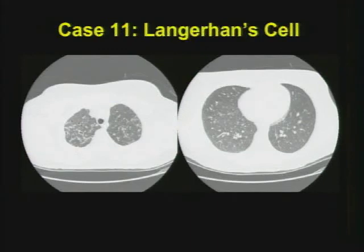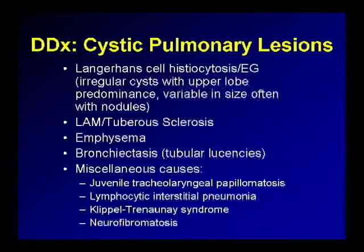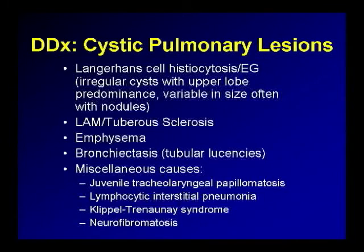Case number eleven: Langerhans cell histiocytosis — or as the old guys say, EG. Irregular cysts in the apices — notice how irregular the margins are of these apically predominant cysts. Cysts of variable size, very irregular contour, and favoring the apices should make you think of Langerhans cell histiocytosis. The differential for cystic pulmonary disease includes LAM (lymphangioleiomyomatosis), emphysema with superimposed interstitial edema, bronchiectasis, and miscellaneous causes like juvenile tracheolaryngeal papillomatosis. If you have the right history — HIV or autoimmune disease like rheumatoid arthritis — consider LIP, lymphocytic interstitial pneumonia, which can present with cysts or small nodules.